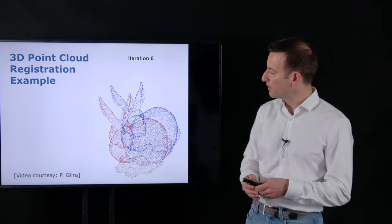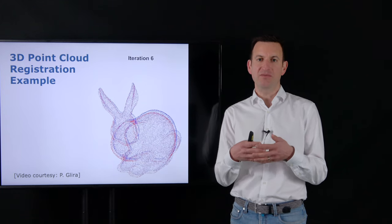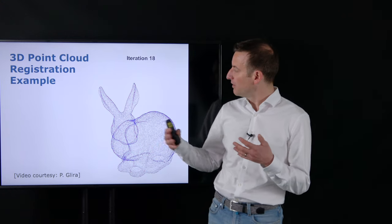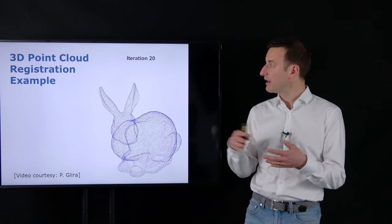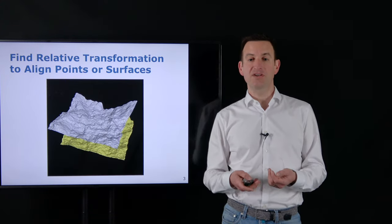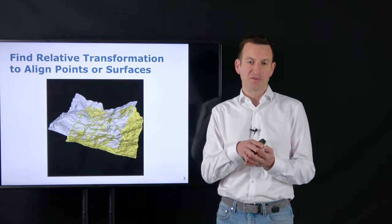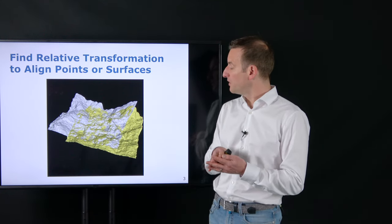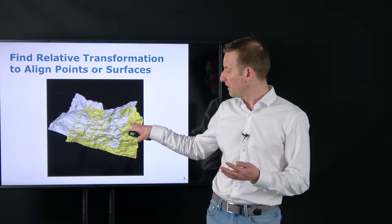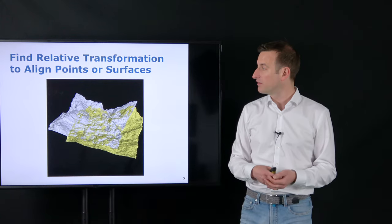To illustrate this, consider two point clouds of a bunny example. The approach tries to find a transformation so that the point clouds overlap as closely as possible — the blue and red point clouds perfectly overlay each other. This can be done not only for artificial objects but also for surfaces of landscapes, finding an alignment so those surfaces overlie. We do this by finding a rigid body transformation that tells us how a yellow surface should be rotated and moved to best align with a gray point cloud.